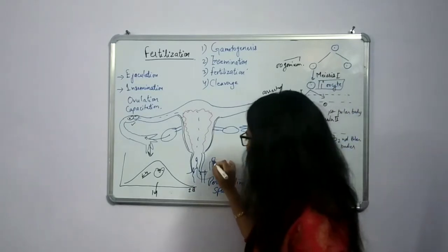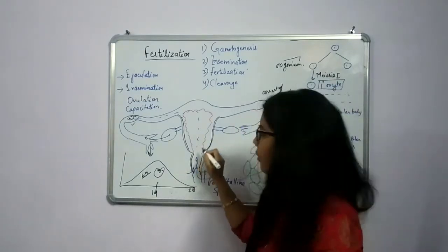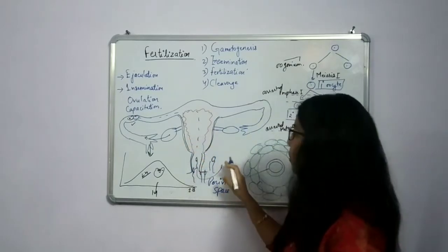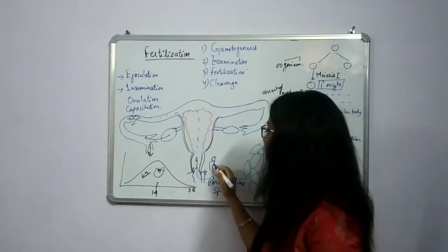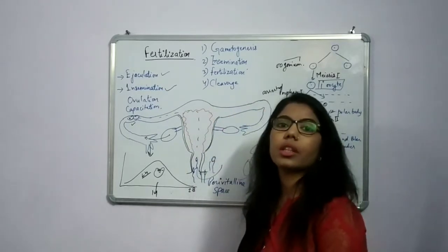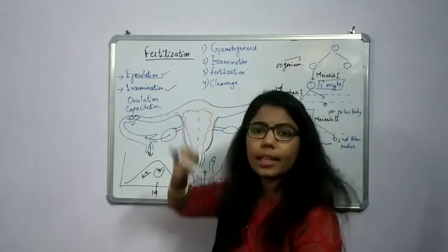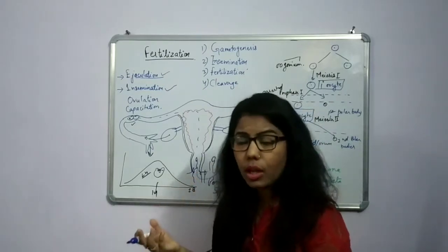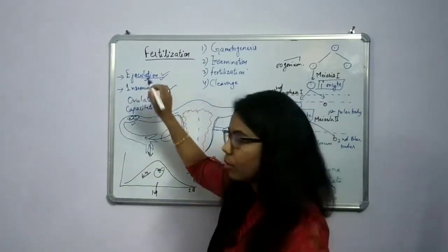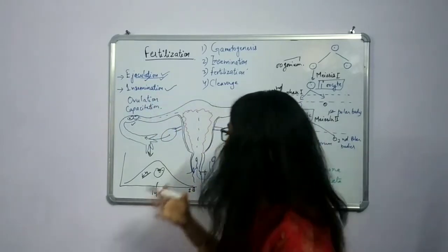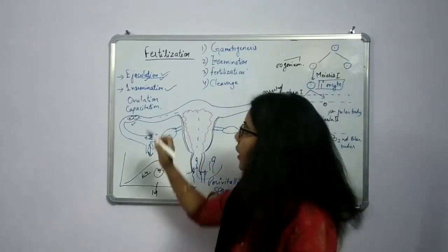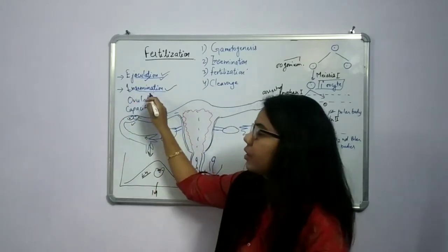Now, as the sperm moves through the cervix, the vagina, and the uterus, there will be some changes in the course of time so that the sperm can fertilize the ovum more easily. I have mentioned two terms: ejaculation and insemination. Ejaculation is the removal of sperm going out from the male body or the penis. Insemination is when the semen enters into the female genital tract after leaving the male reproductive part.